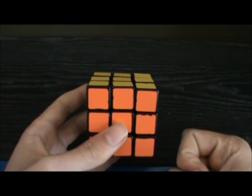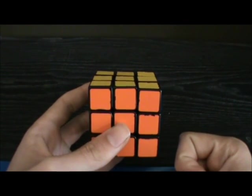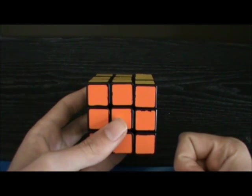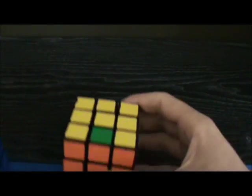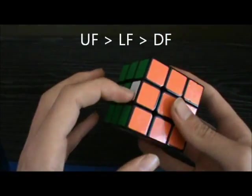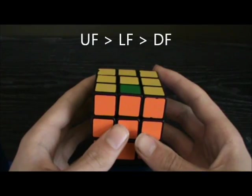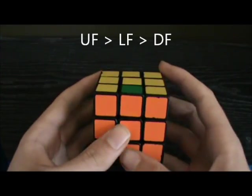As I said, you can use turbo whenever the cycling pieces are on the same layer. It doesn't have to be the U layer. For example, UF to LF to DF. This can be solved by just a counterclockwise U perm by first rotating.